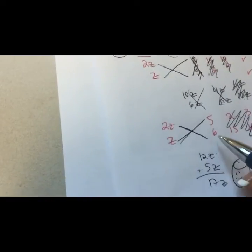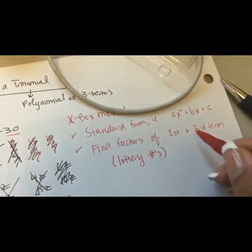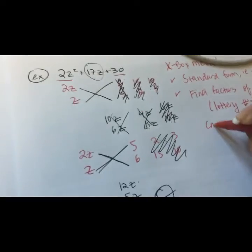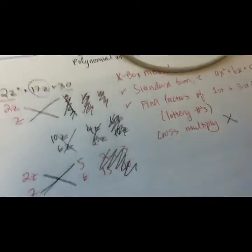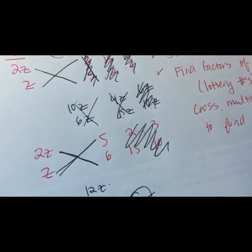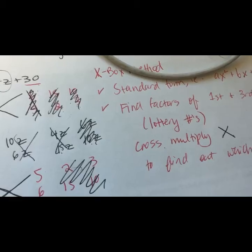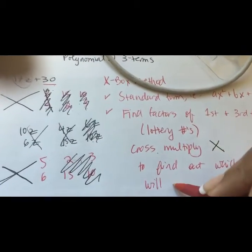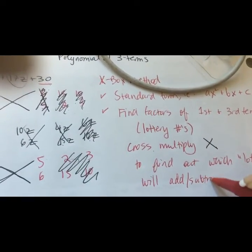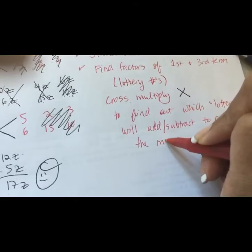Once I find my winning lottery tickets I can stop. To summarize: find the factors of the first and third terms — those are your lottery numbers. Then cross-multiply using the X to find which lottery numbers will add or subtract to give you the middle term.